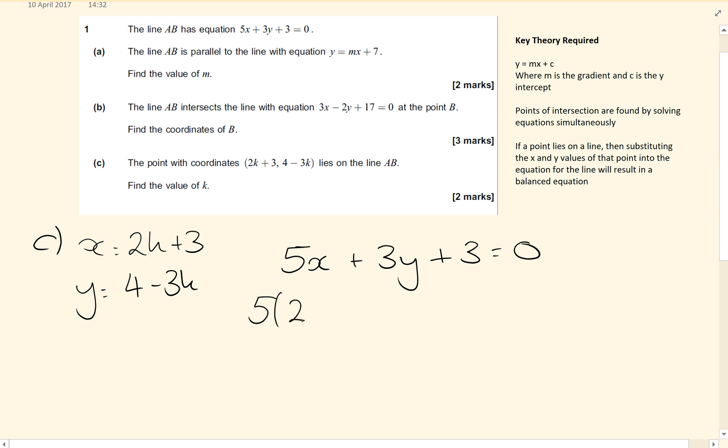So we've got 5 lots of 2k plus 3, that's the x value, plus 3 lots of 4 minus 3k, that's the y value, and when I add 3 to that, I get 0.